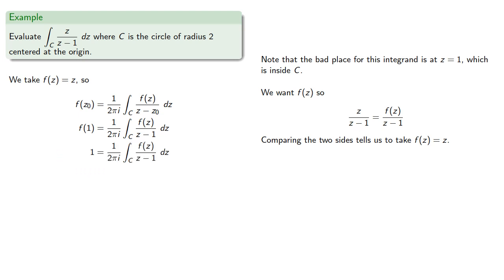And since we just want the integral, we'll multiply by 2πi. And putting things back where we found them, f of z was z. And so our integral is equal to 2πi.